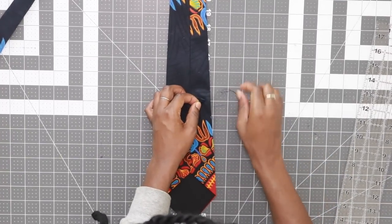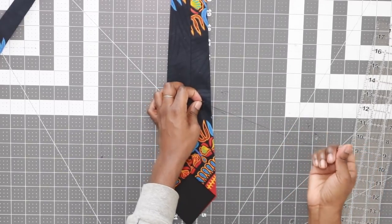After you're done slip stitching both ends, go ahead and give your tie a nice press and you are all finished.